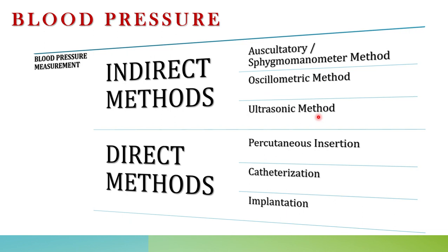The third indirect method is the ultrasonic method, which uses the principle of Doppler shift. When a beam is incident on a moving conductor, part of the beam reflects back, and that back-scattered beam has a frequency shift. Based on that frequency shift we measure the blood pressure. These three indirect methods were discussed in detail in the last class.